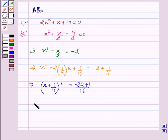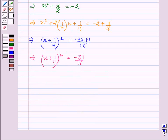This implies (x + 1/4)² = -31/16. Now we see that the RHS is negative, but (x + 1/4)² cannot be negative for any real value of x. So the roots of the given equation do not exist.